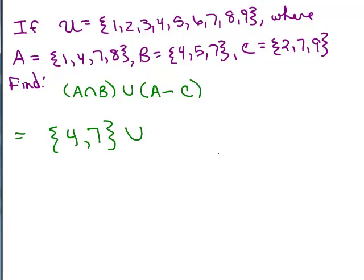We're going to union that with A take away C. So that's a little complicated to do in your head but maybe you could do it. If you look over here at A, we've got one, four, seven, and eight. Are any of those over in C? I've got two, seven, and nine. Well, there's a seven so I can't keep the seven in A. So what's left will be the one, four, and eight.